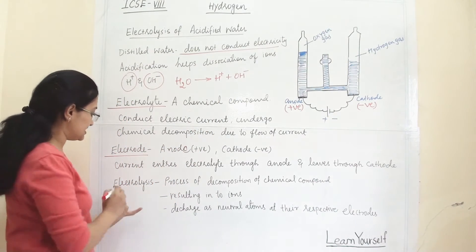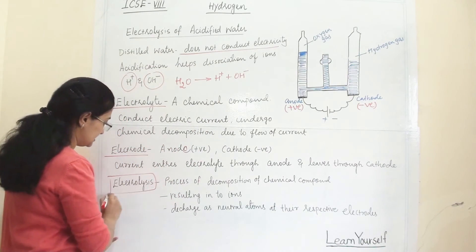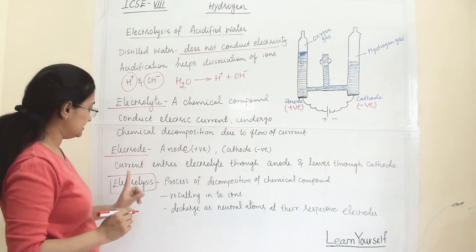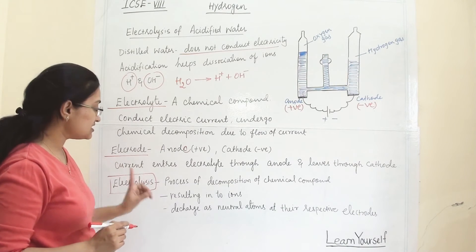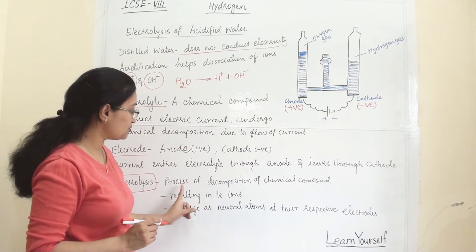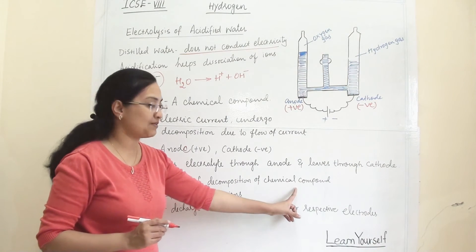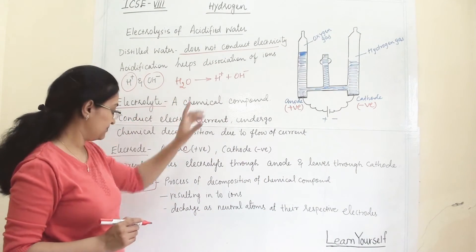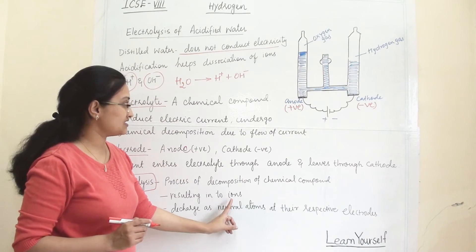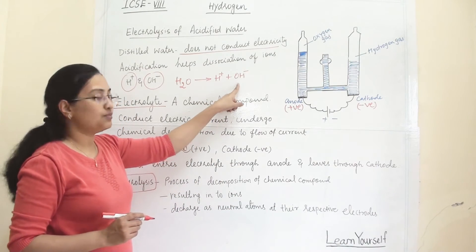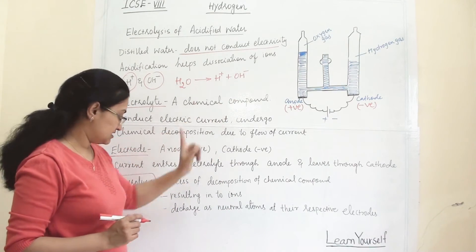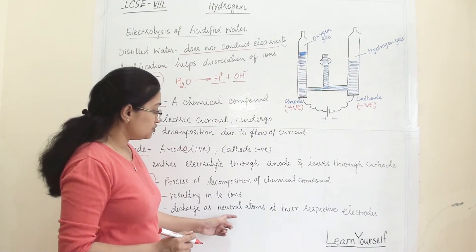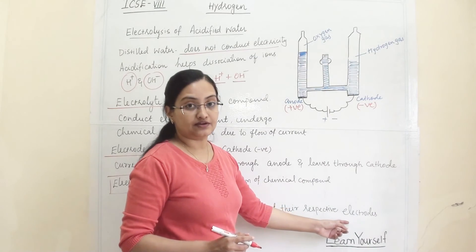Now electrolysis. This is a process — the electrolyte and electrodes were the important components of the electrolytic cell, and electrolysis is the process. Electrolysis is the process of decomposition of chemical compounds. Here, water has been decomposed, resulting in ions. It will decompose and give us ions, which are then discharged as neutral atoms at their respective electrodes.